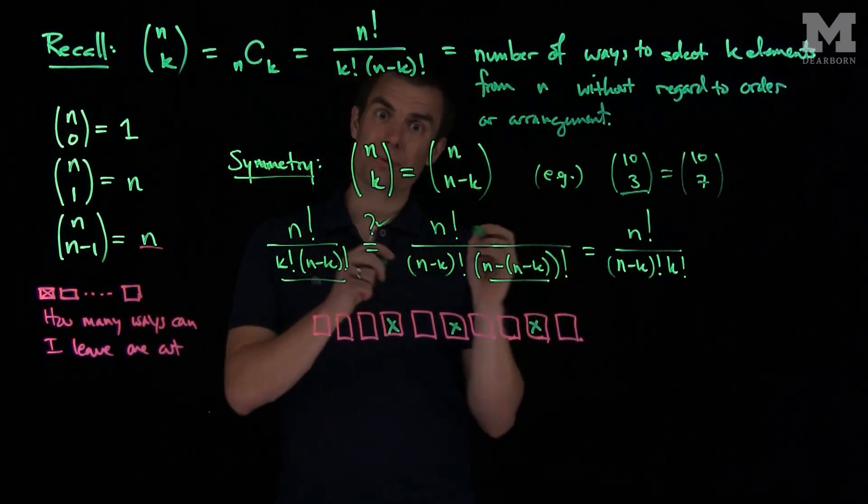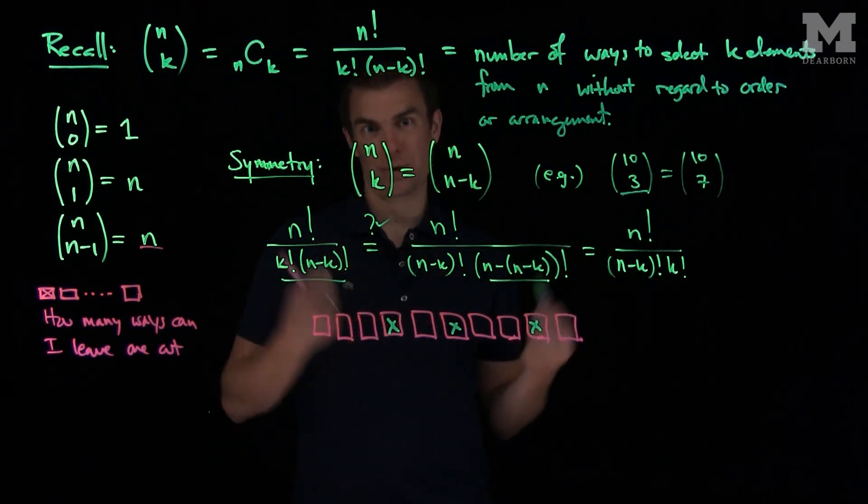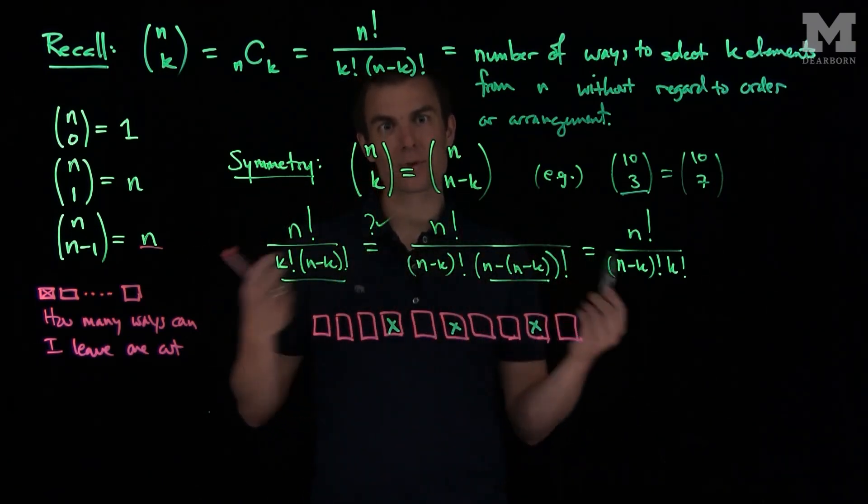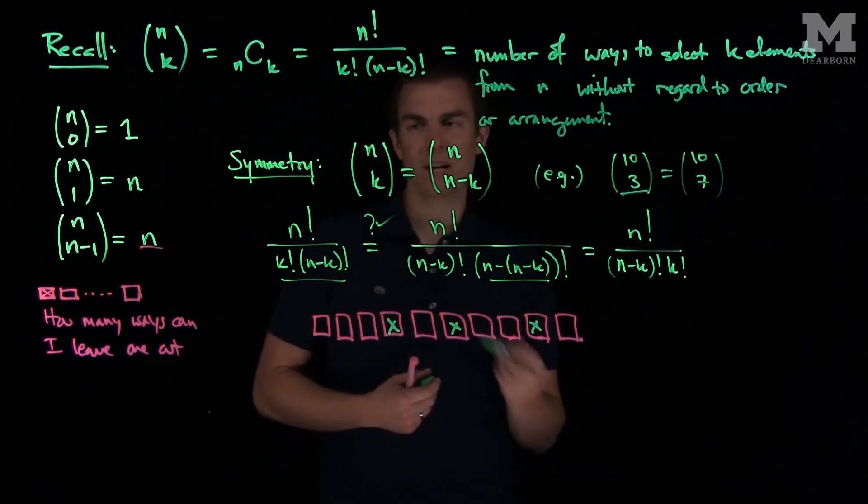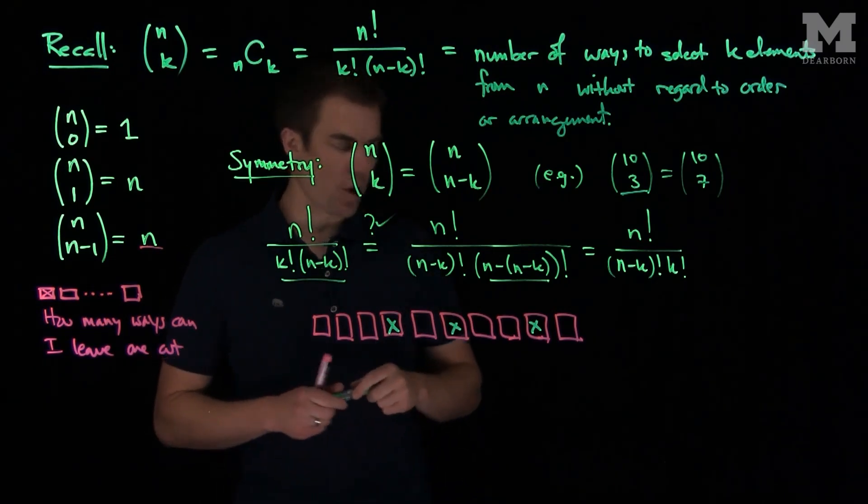By choosing 3, I have also anti-selected 7 of them. So every time I choose 3, I've also, in effect, not chosen 7 of them. So reversing the rules of chosen versus not chosen, we see that 10 choose 3 is 10 choose 7, where n choose k is n choose (n-k).